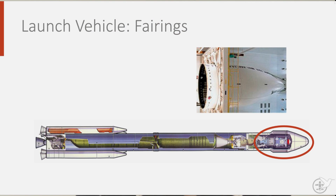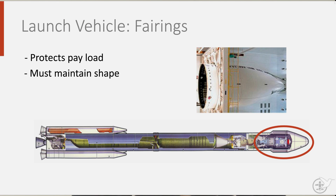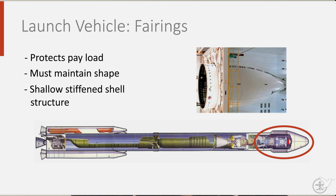Fairings have as their main function to protect the payload during the launch from the aggressive environment around it. They must maintain their shape and are therefore often designed as shallow, stiffened structures. Stage structures are the structures that form the body of the rocket. A rocket often has multiple stages, each with their own propulsion system, so it can dispose of used stages during the launch, eliminating weight and increasing acceleration.